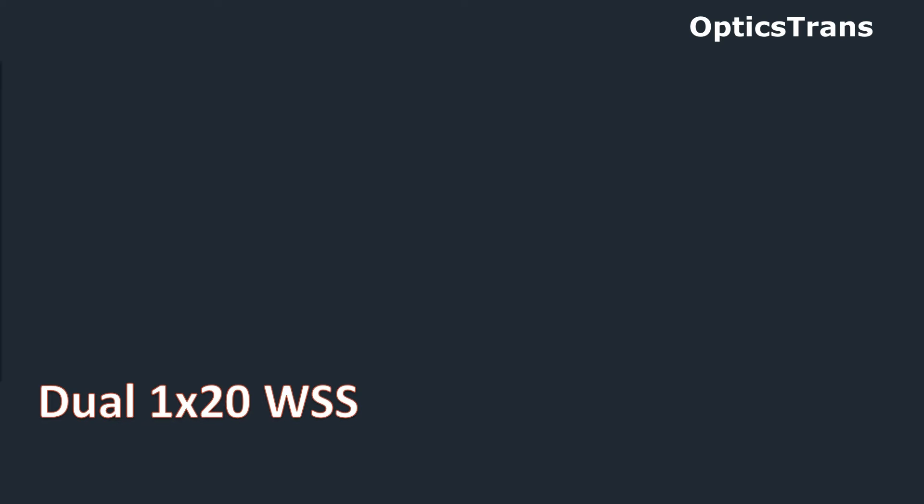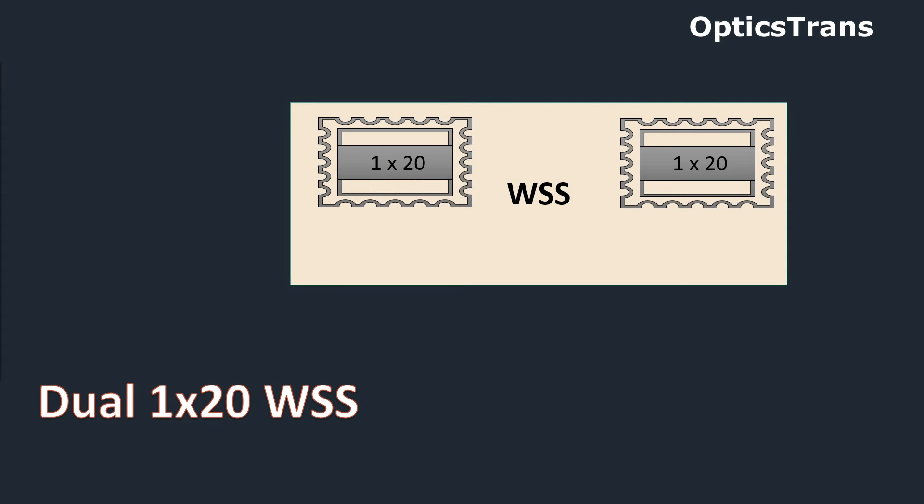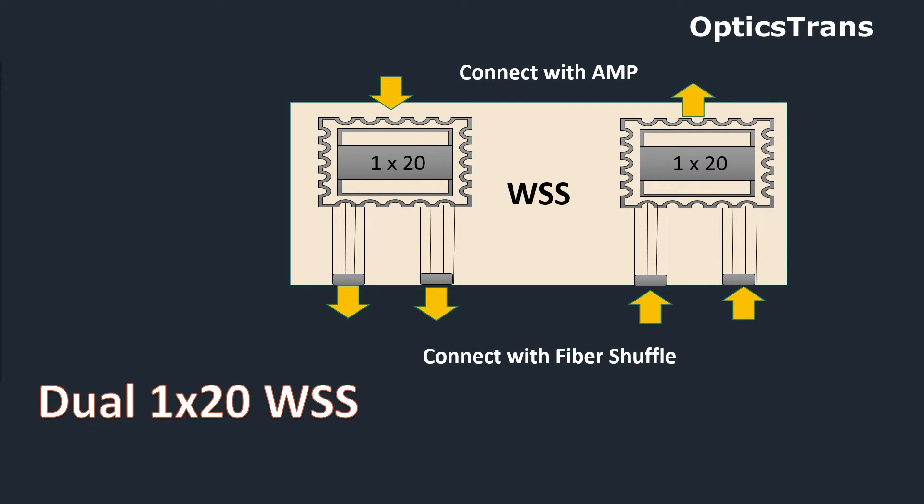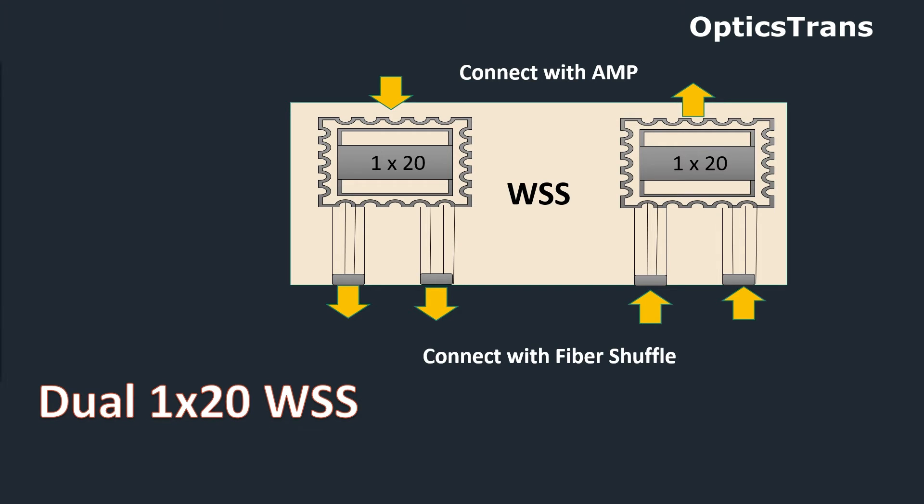First, dual 1x20 WSS. This card having dual WSS, rest all functionalities are same like other configuration ROADM WSS. Here one WSS is used to add and one used to drop the traffic. For dropping the signal, one WSS receives the signal from amplifier and sends to WSS output port, which will connect with fiber shuffle. For add signal, one WSS receives the signal from fiber shuffle and sends to WSS other port, which will connect with amplifier.